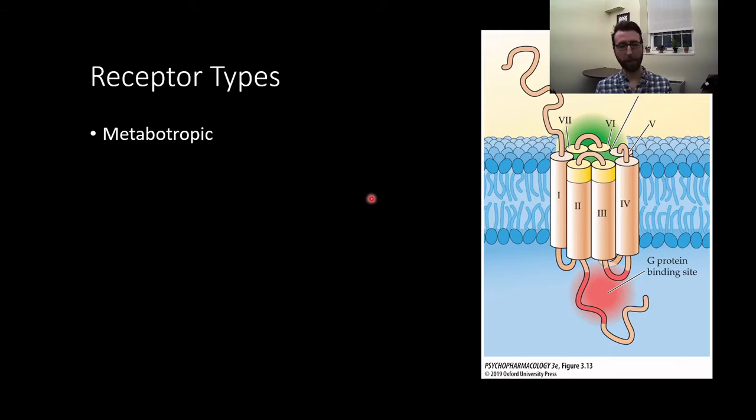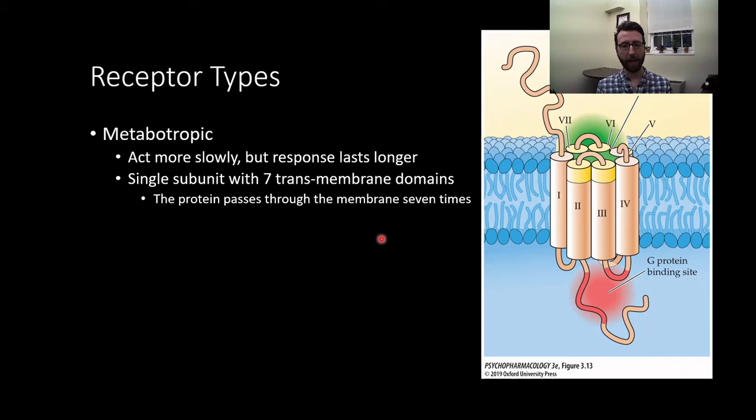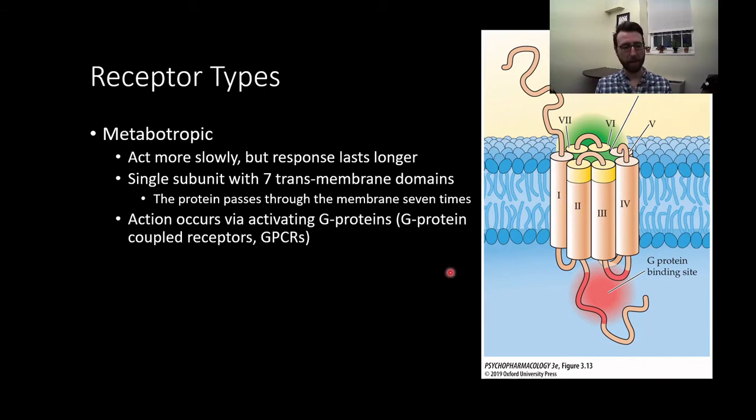We also have metabotropic receptors, which look a little bit different. These tend to act more slowly. So with an ionotropic receptor, it's a very fast transient response. Channel opens, channel closes, ions flow in. It happens very quickly. With metabotropic receptors, things happen a little bit more slowly, but the effects tend to be a little bit more long-lasting. Unlike ionotropic receptors, which are made up of all these different little subunits, with a metabotropic receptor, we have a single subunit with seven transmembrane domains. Basically, it just snakes its way through the membrane seven times, creating these seven different transmembrane domains. So instead of opening an ion channel on the site of this receptor, with metabotropic receptors, typically we see action occurring via G proteins. We can call these G protein coupled receptors, or GPCRs for short.